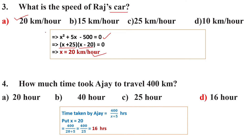If you find any incorrect answer, please write in the comment box. If you find the same answer, also write in the comment box. Fourth question: how much time did Ajay take to travel 400 km? Since x = 20 km per hour, Ajay's speed is x + 5 = 25 km per hour. Time taken by Ajay = 400/25 = 16 hours. Option D is the correct answer.